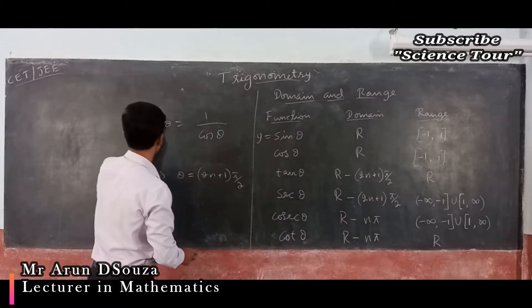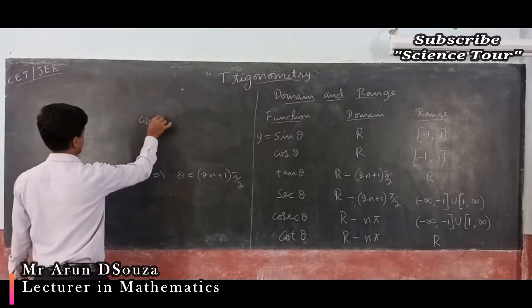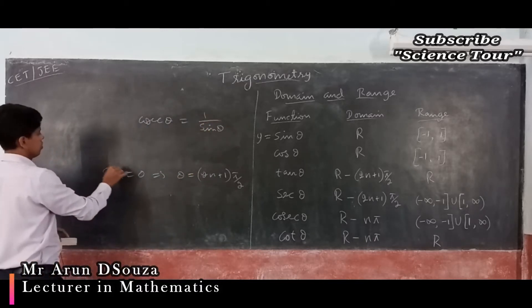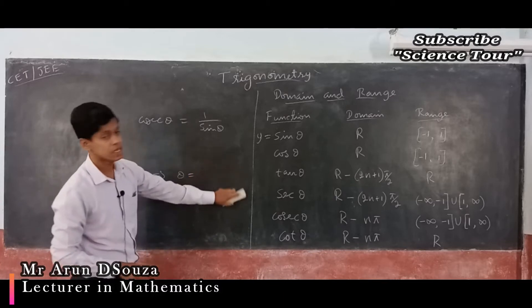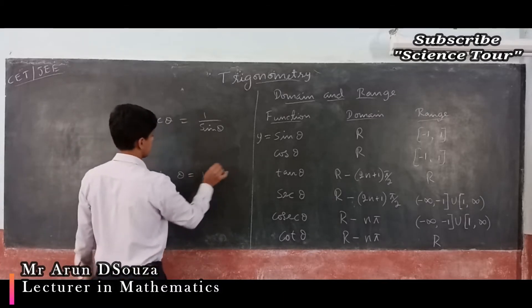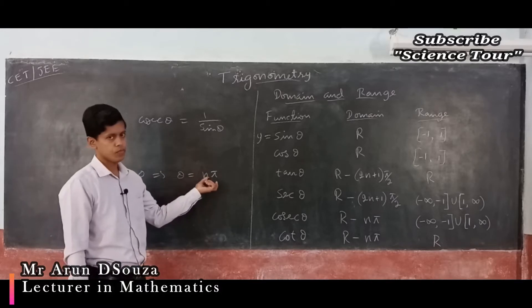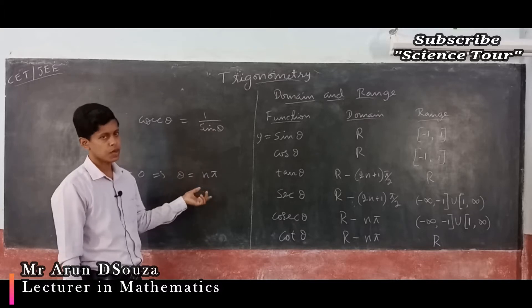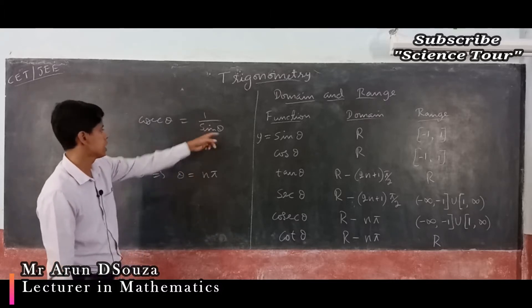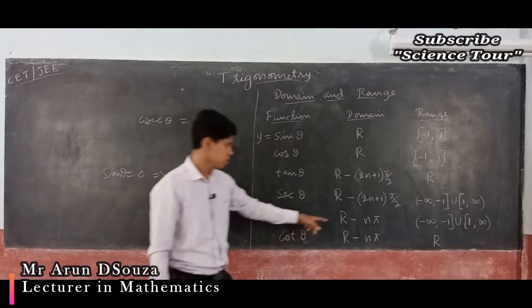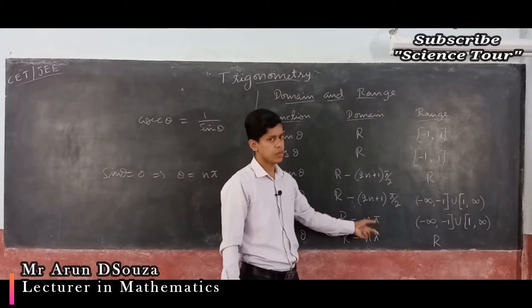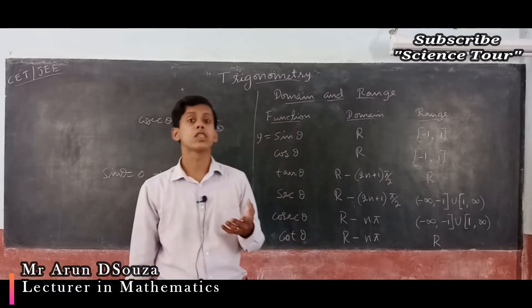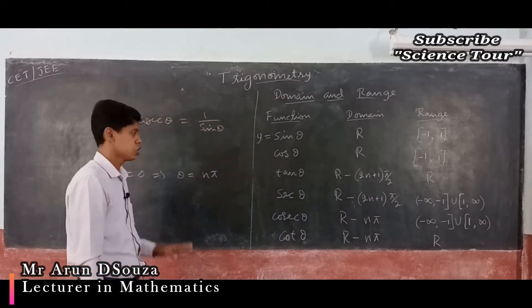For cosec θ, the domain is all real numbers except nπ. Similarly for cot θ, since cot = cos/sin, the denominator is sin θ, so sin θ must not be 0 — the domain is also all real numbers except nπ.